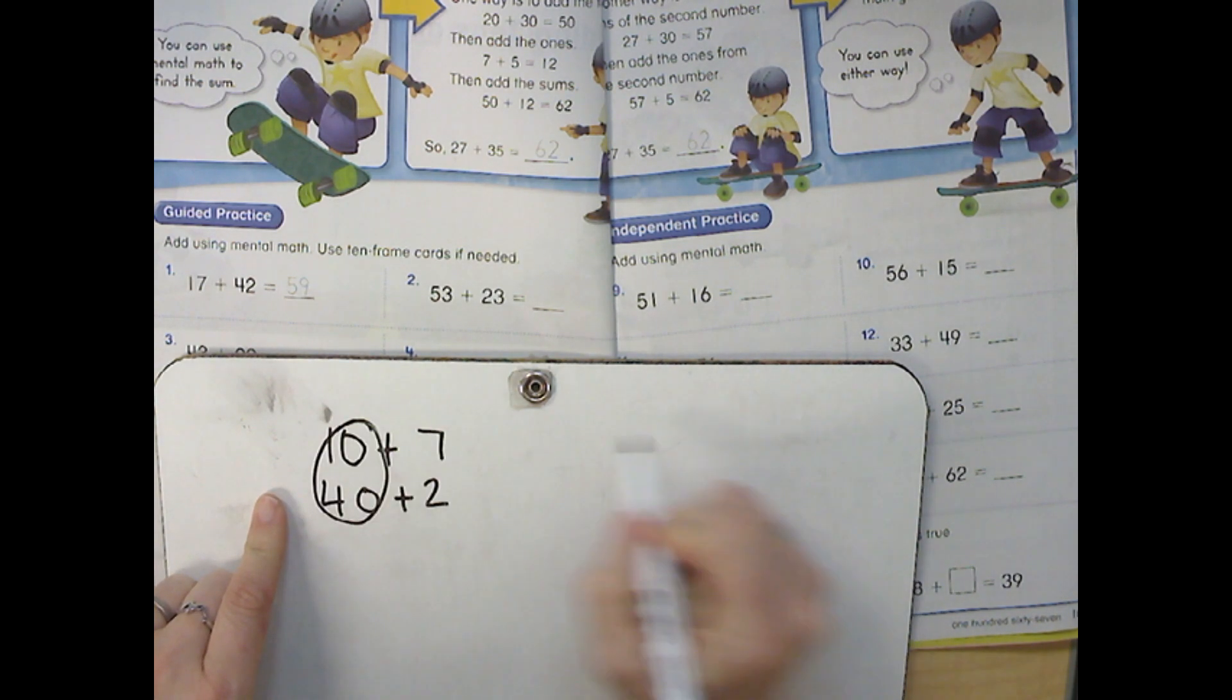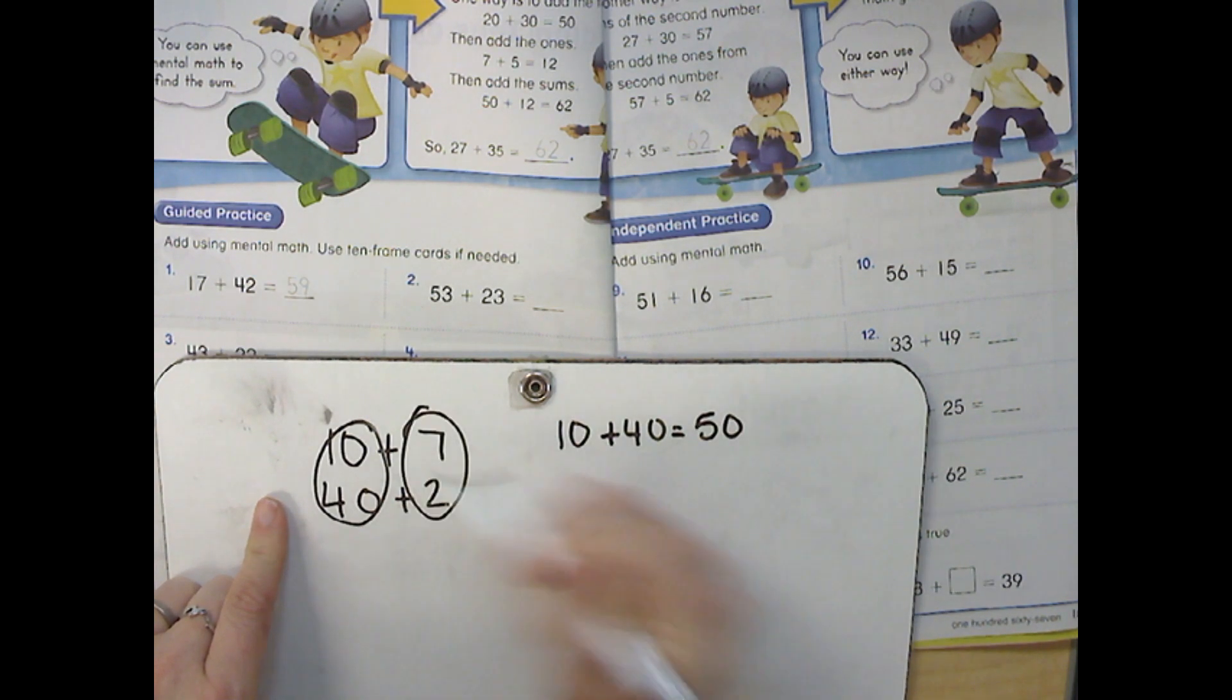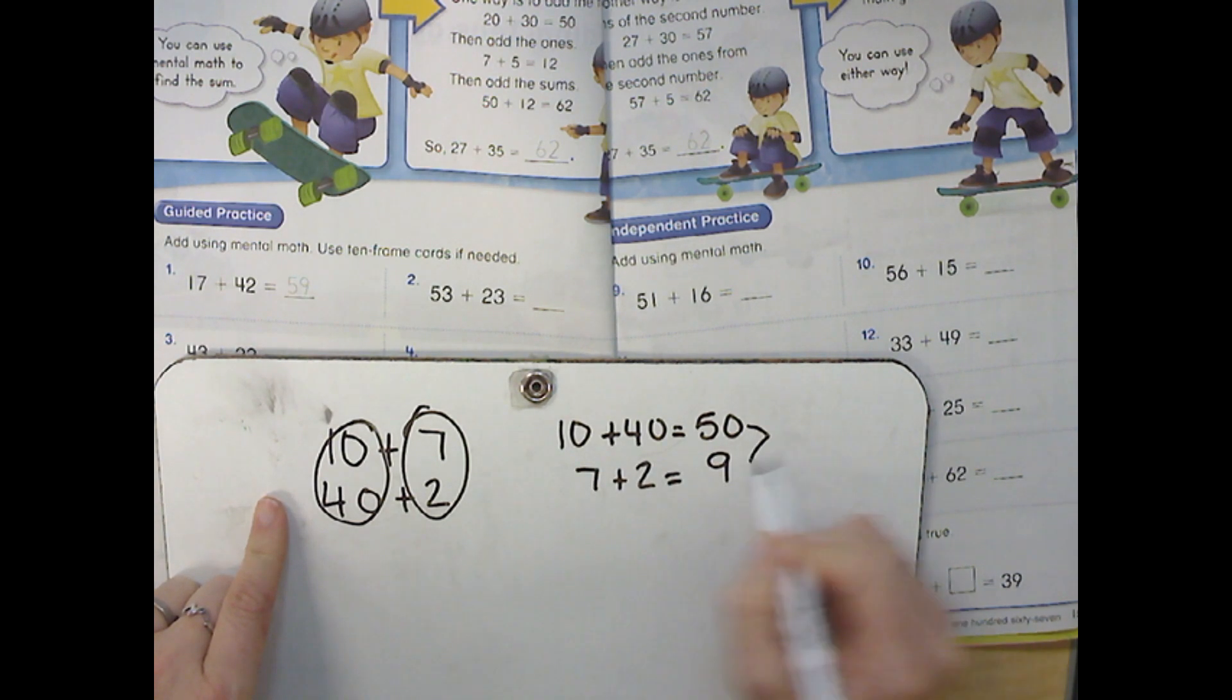I'm going to add my 10s together. 10 plus 40 equals 50. I'll add my 1s together. 7 plus 2 equals 9. 50 plus 9 is 59. There's my answer.